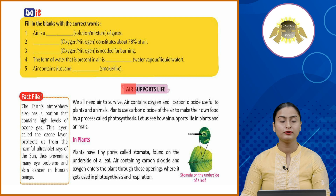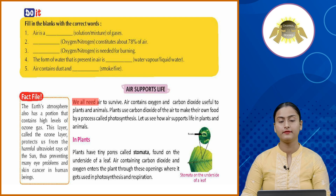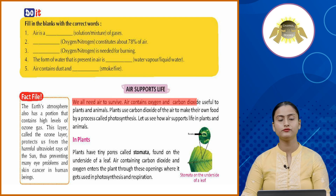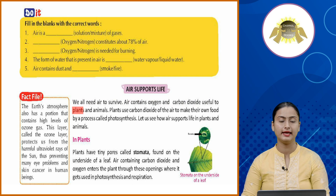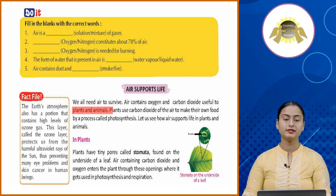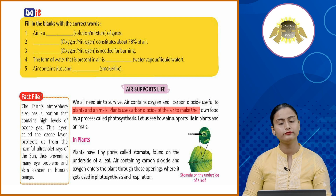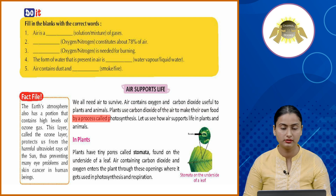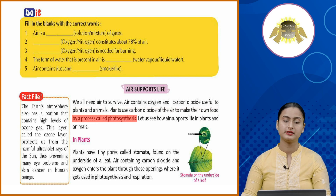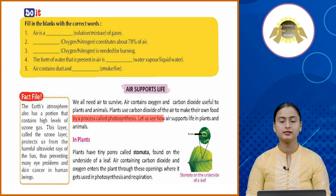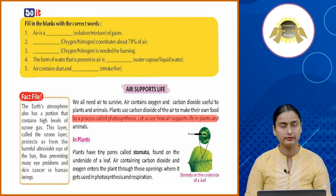Air supports life. We all need air to survive. Air contains oxygen and carbon dioxide, which are useful to plants and animals. Plants use carbon dioxide from the air to make their own food by a process called photosynthesis. Let us see how air supports life in plants and animals.